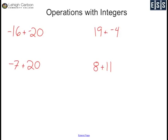Negative 16 plus negative 20. Both of these numbers are negative, so my answer is going to be negative. 16 plus 20 is 36, so my answer is negative 36.